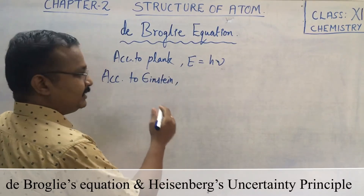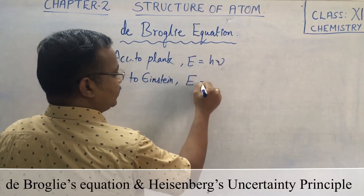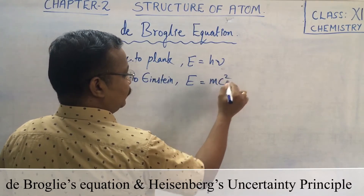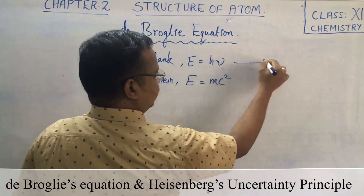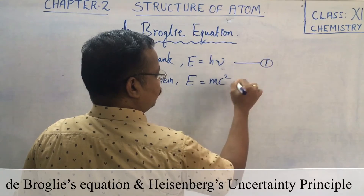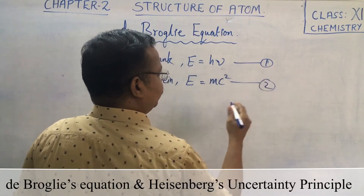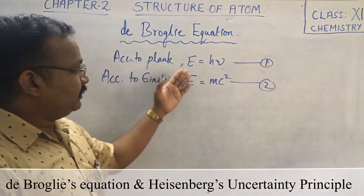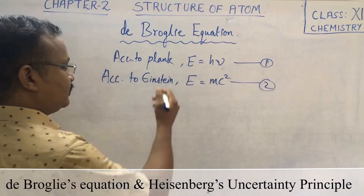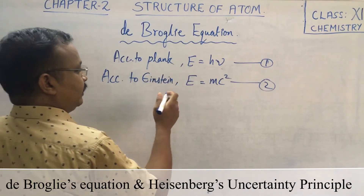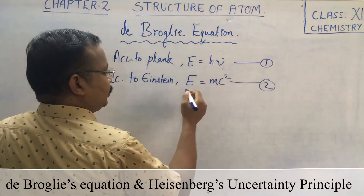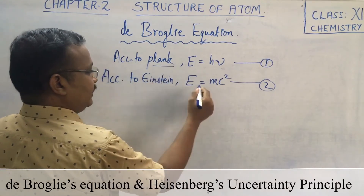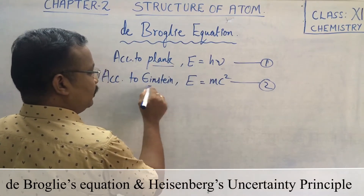According to Einstein, mass slowly changes to energy, that is E is equal to mc squared — let us take it as equation 1. And equation 2 is E is equal to H nu according to Planck. Let's derive de Broglie's equation from these two equations.